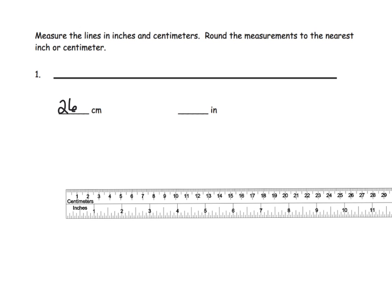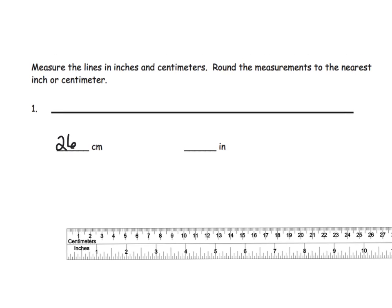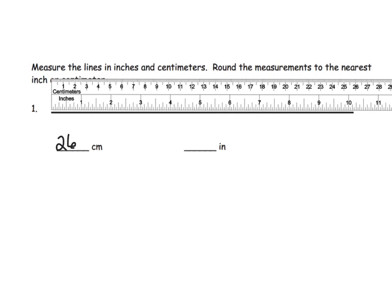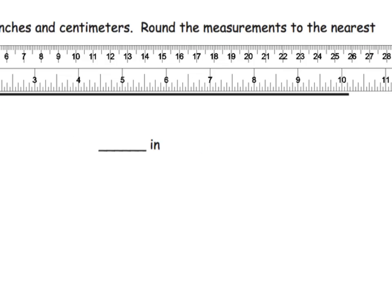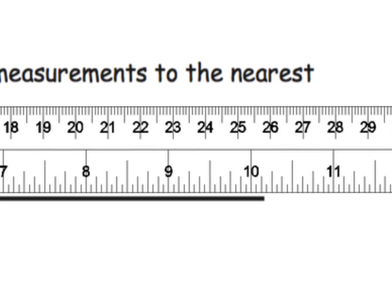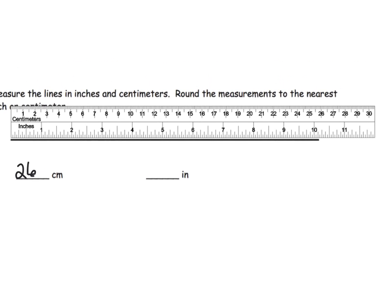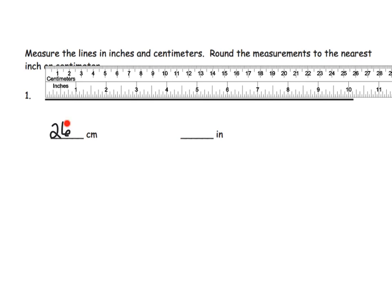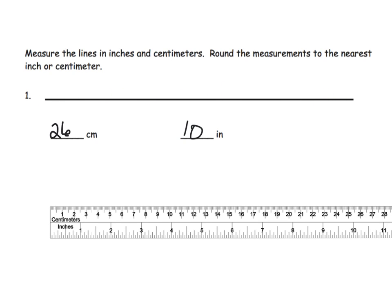Now we want to measure the same line in inches without changing the line at all. With the ruler placed down, I can zoom in and see it's a little bit larger than 10 but not much, so let's round that to 10 inches. So 26 centimeters is really close to about 10 inches — we're measuring the same line, but using centimeters gives us 26 and using inches gives us 10. The number of inches is smaller because inches are really big and centimeters are really small.